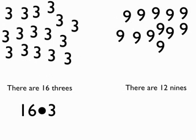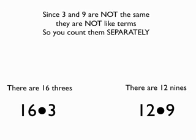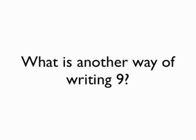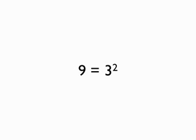So there are 16 threes and 12 nines. 16 threes means 16 times 3. 12 nines means 12 times 9. Since 3 and 9 are not the same, they are not like terms, so you count them separately. Here's a question: what is another way of writing 9? 9 is the same as 3 squared.